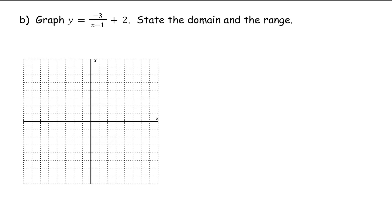We're going to be able to take a look here and see that we have asymptotes — an X asymptote and a Y asymptote, just like every other time. We're going to have a vertical asymptote at X equals 1, and we're going to have a horizontal asymptote at Y equals 2. So let's go ahead and put those on our graph. X equals 1 is right here — a vertical asymptote. And a horizontal asymptote at Y equals 2. And there are our asymptotes.